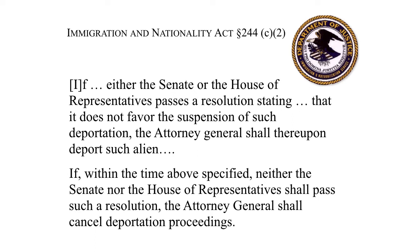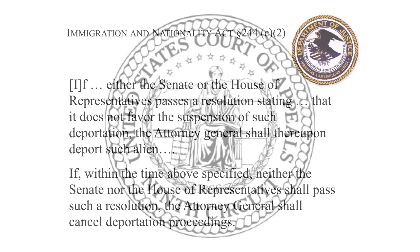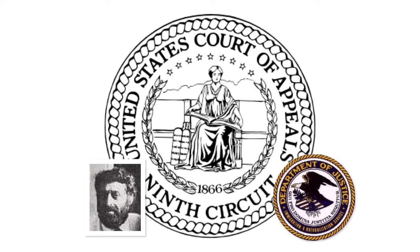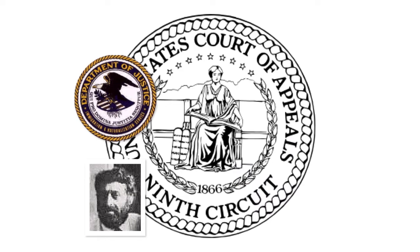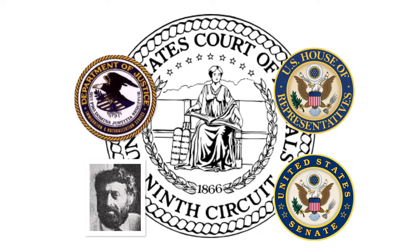Chadda appealed within the INS, arguing that the legislative veto was unconstitutional. The INS denied his appeal on the ground that it had no authority to declare the statute under which it operated unconstitutional. Chadda then appealed to the Ninth Circuit Court of Appeals. The Attorney General appeared but took Chadda's side against the constitutionality of the one-house veto provision — presumably due to the hydraulic pressure that builds up inside any official whose power is challenged. That same hydraulic pressure prompted the House and Senate to appear as amici curiae to defend their power to exercise legislative vetoes. The Ninth Circuit ruled for Chadda, and the case went to the U.S. Supreme Court.